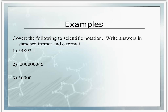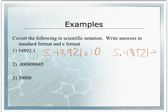Let's do some examples of putting numbers into scientific notation. We're going to write both in the times 10 format and the E format. In problem number 1, our front number — also known as a coefficient — will be 5.48921. We're going to keep all the values because they are all significant. We count how many places we move the decimal: 1, 2, 3, 4 places. So our exponent and the number next to the E will both be 4. This number is greater than 10, so both will be positive.